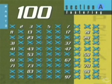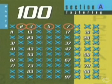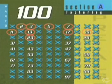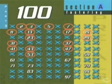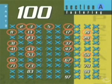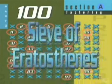All of the remaining numbers that are not crossed off are the prime numbers less than 100: 2, 3, 5, 7, 11, 13, 17, 19, 23, 29, 31, 37, 41, 43, 47, 53, 59, 61, 67, 71, 73, 79, 83, 89, and 97. And that's how the sieve of Eratosthenes works.